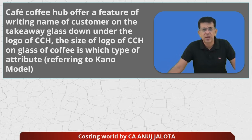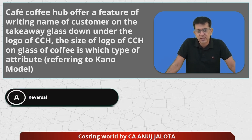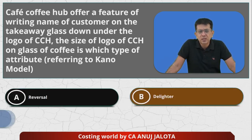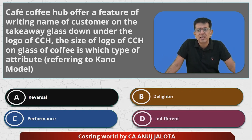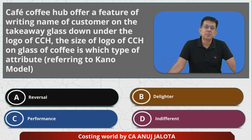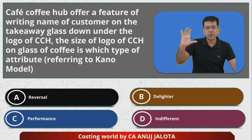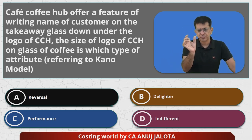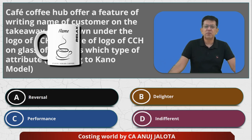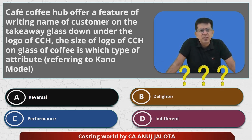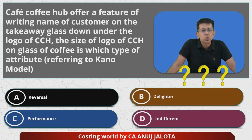This is referring to the Kano model. The four options are: A - Reversal, B - Delighter, C - Performance, and D - Indifferent. So if you buy a coffee from CCH as a takeaway, your personalized name will be written on the glass. Think about it: does the size of the logo of CCH matter to you? If you've done this chapter, you'll surely know the answer.